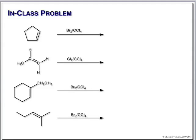In our first problem, we are adding bromine to an alkene. We know that this is going to give us a 1,2-dibromide, and that the stereochemistry is going to be trans. We must show trans stereochemistry. You could use wedge bonds — it's important that you show one bromine is up above the ring plane and the other is down below the ring plane.